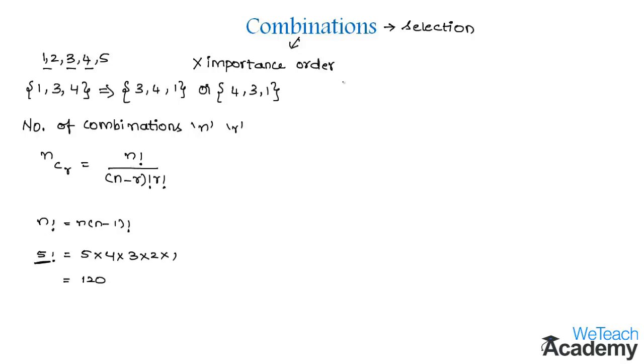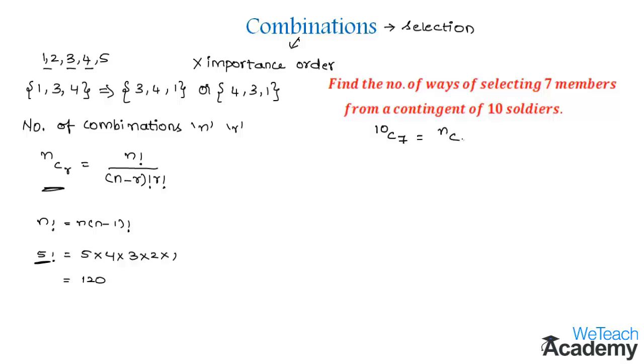Let me explain this concept with a simple example. We have to find the number of ways of selecting 7 members from a contingent of 10 soldiers. This can be represented as 10C7, which is in the form nCr where n is 10 and r is 7.